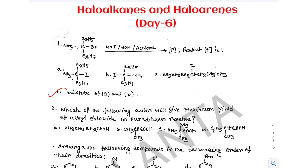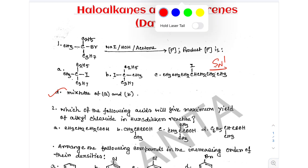Obviously we are going to apply the mechanism of SN1. This is a 3-degree, highly stable carbocation. There is water — a polar protic solvent. This is a chiral center. In SN1, the intermediate is planar, so attack occurs from both front and back face, giving a mixture of products. The correct answer is Option 4: mixture of A and B.